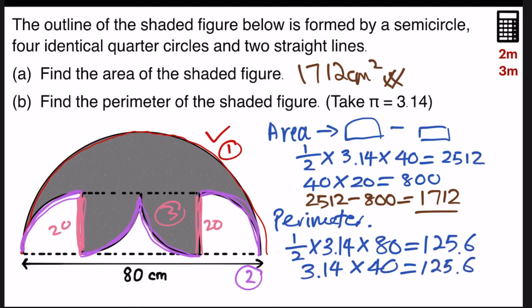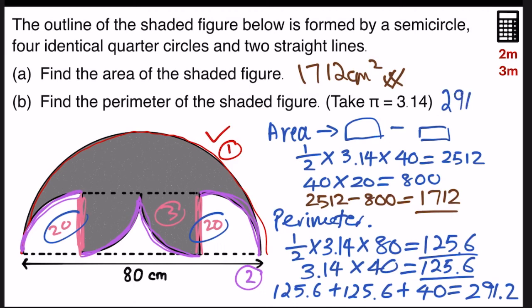The last step, we just have to add this 20 and 20, which is 40, into the sum of these 2. So let us do the last step. 125.6 plus 125.6 plus 40. And that gives me 291.2. And that's the answer to my part B, 291.2 centimeters.